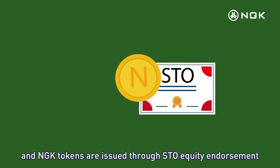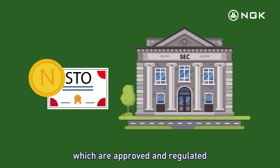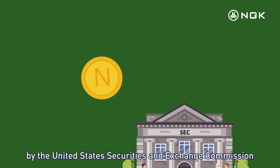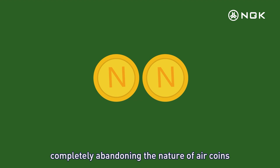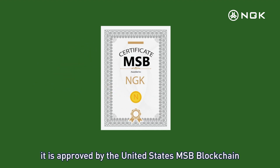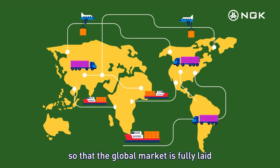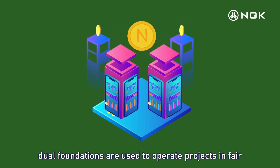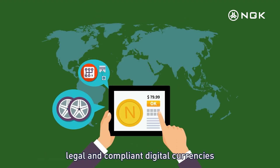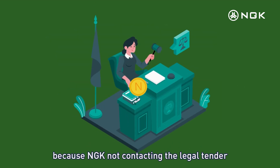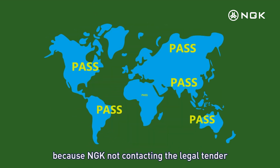NGK tokens are issued through STO Equity Endorsement, which is approved and regulated by the United States Securities and Exchange Commission, completely abandoning the nature of air coins. It is also approved by the United States MSB blockchain legal operating license, so that the global market is fully covered. Dual foundations are used to operate projects in fair, legal, and compliant digital currencies, while avoiding regional policy risks because NGK does not contact legal tender.